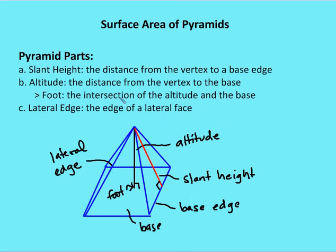Pyramid parts. We talked about the lateral edge. We also have an altitude. The altitude goes from the vertex to the base of the pyramid and intersects at a right angle with the base at the foot. We also have a slant height. The slant height goes from the vertex and is perpendicular to one of the base edges — it's the distance from the vertex to the base edge. The foot is the intersection of the altitude and the base. The lateral edge is the edge of the lateral face.